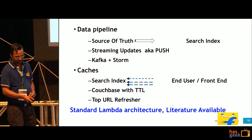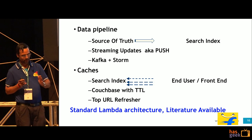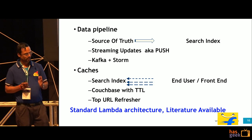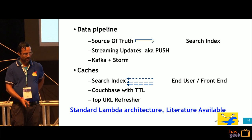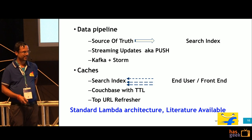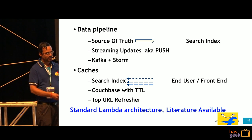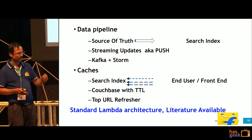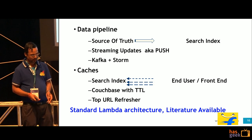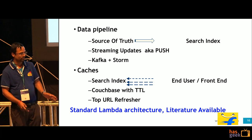Now, the data pipeline. You have the source of truth and from there you have to send data to the search index — this is usually a pipe, not a per-request basis. Streaming updates via push: Kafka plus a consumer is the standard architecture. You also have a cache at the front end with TTL. This is the standard lambda architecture — there are a lot of talks about it, so I am not going to go into detail.